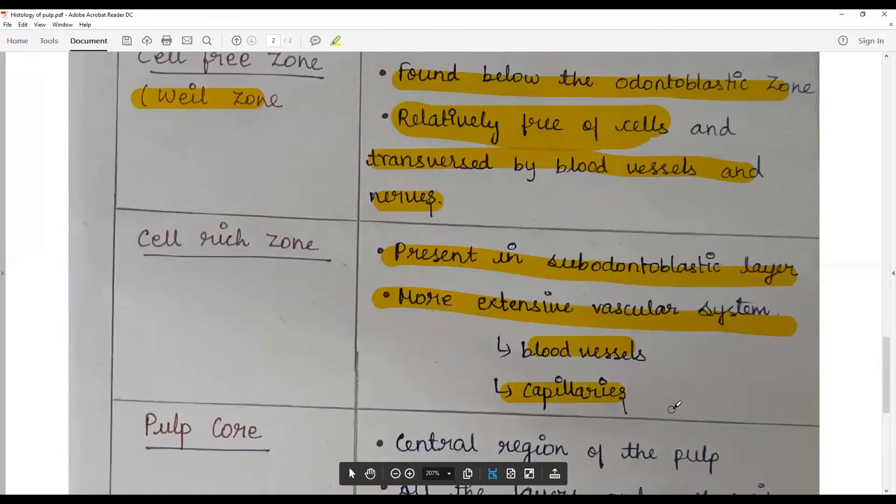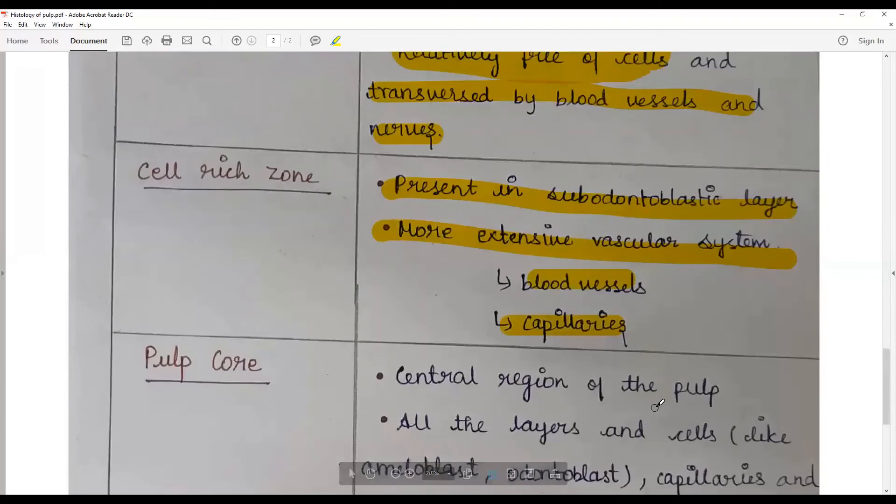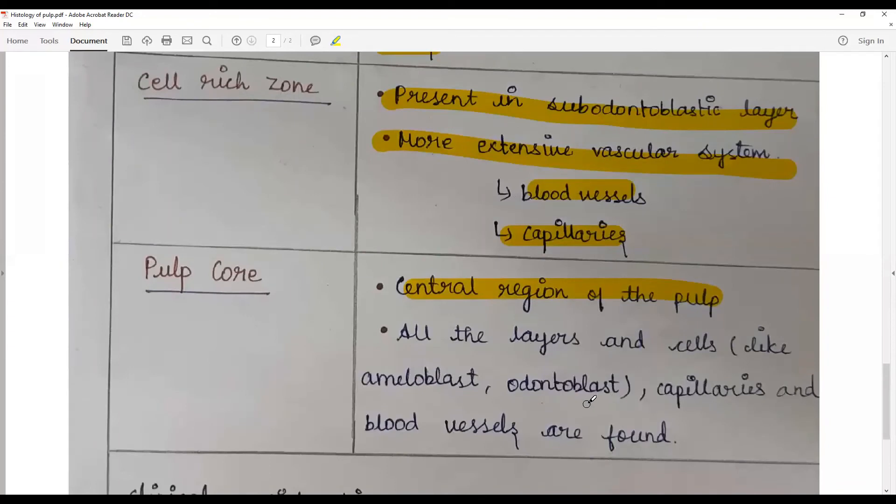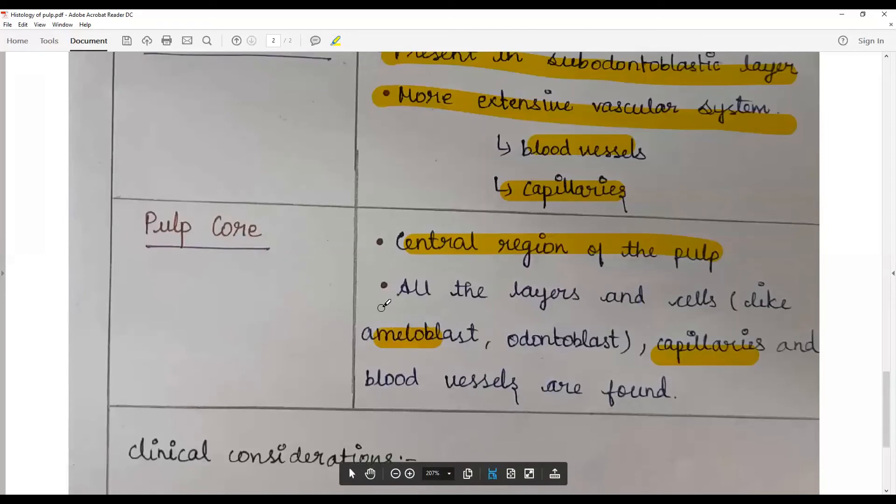Pulp core - the central region of the pulp. All layers and cells like odontoblast, parts of capillaries, defense cells are seen here. Ameloblast won't be seen here.